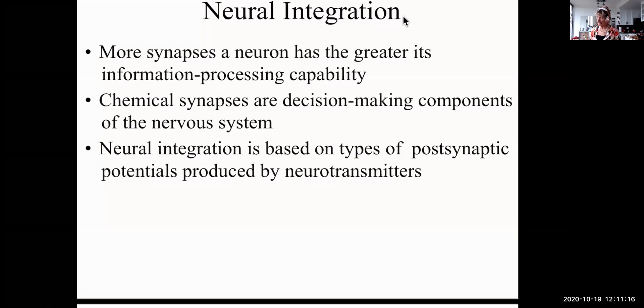The more synapses a neuron has, the greater its information processing capability. The synapses are the decision-making components of the nervous system, and you can increase your synapses and make memories easier to recall in that way. Neural integration is when neurons integrate with each other, send signals back and forth. It's based on types of postsynaptic potentials that are produced by neurotransmitters.